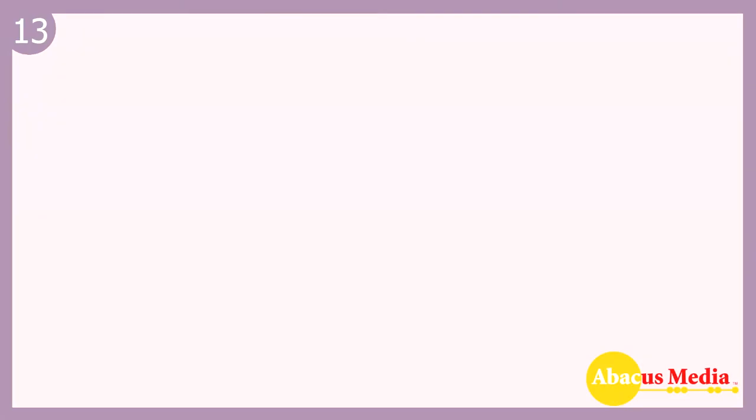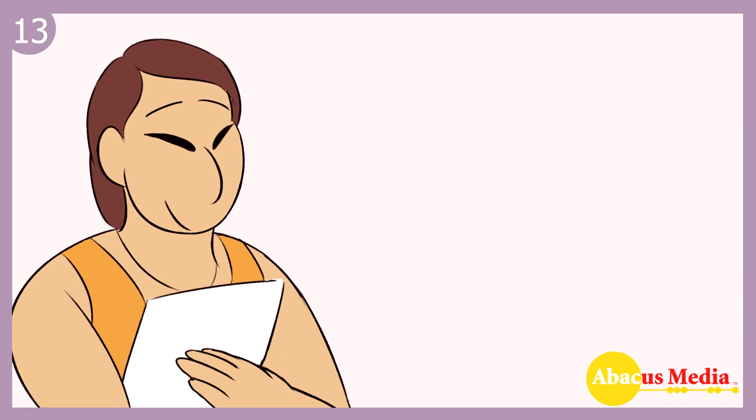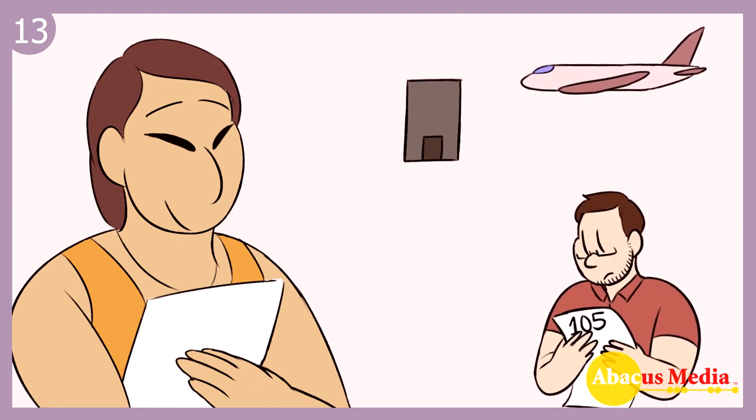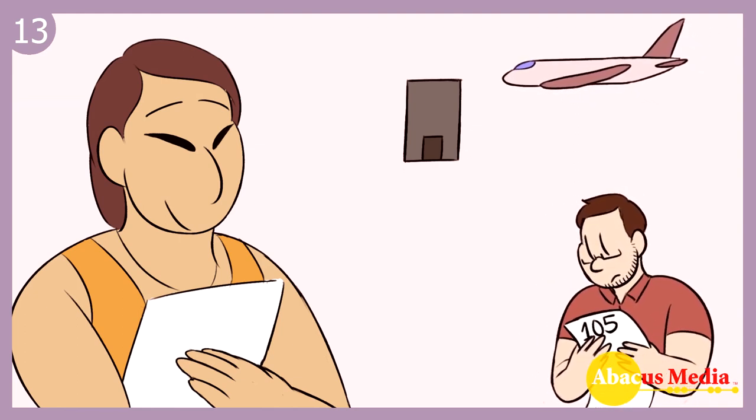Number thirteen: You may qualify for special tax breaks if you hire your spouse to work for you. For example, if your spouse accompanies you on business trips for valid business reasons, you can deduct his or her expenses along with your own. Investigate other benefits including a Section 105 plan to be able to deduct 100% of your family's out-of-pocket medical expenses.